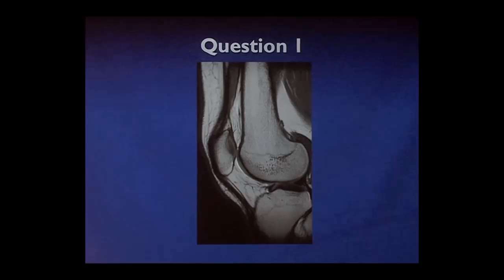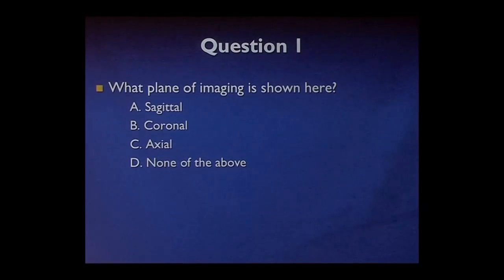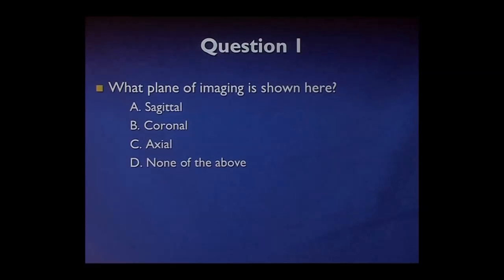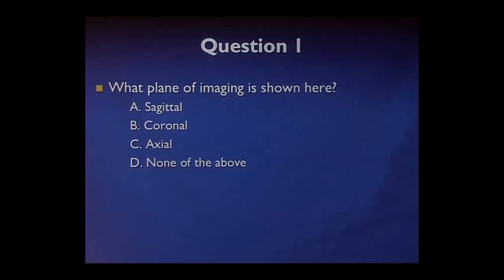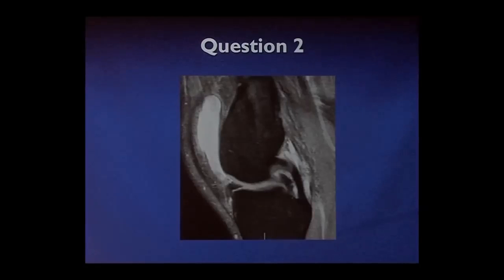Question one — this image, which I will tell you is of the knee. The question being: what plane of imaging is shown here? This is an MRI of the knee, and again, what plane of imaging is shown here? The options being: a sagittal MRI plane, a coronal MRI plane, an axial plane, or none of the above.